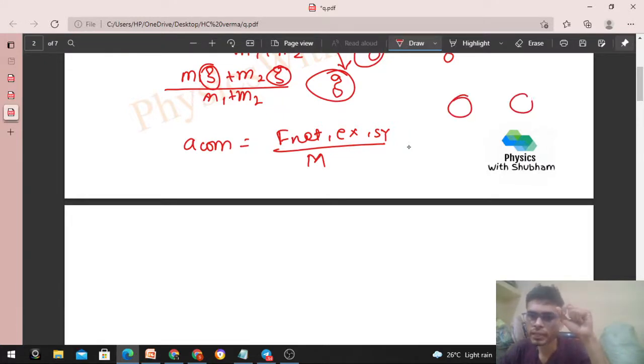Now what is the net external force on the system? Your system is two balls. Let's say the first ball has mass m1 and second has m2. So what is the net external force on the system? That is m1·g plus m2·g. On m1, m1·g acts in the downward direction, and on m2, m2·g acts in the downward direction.